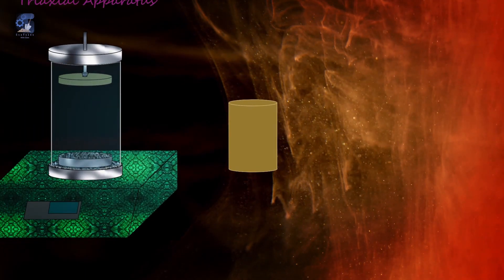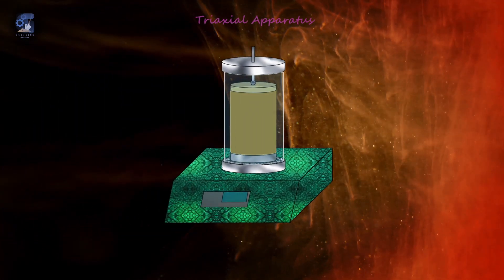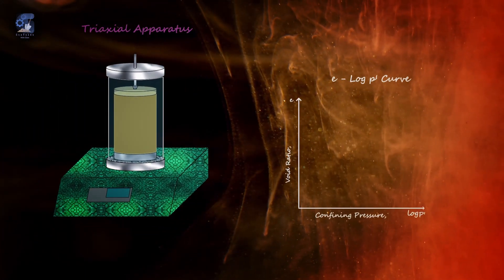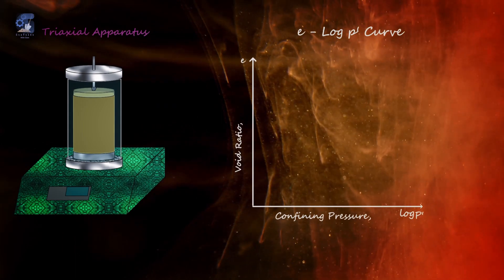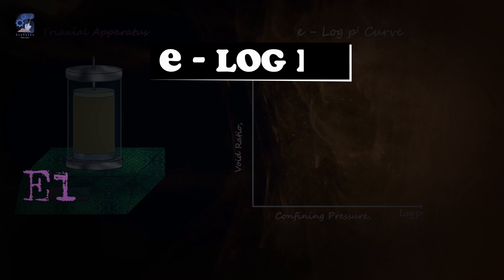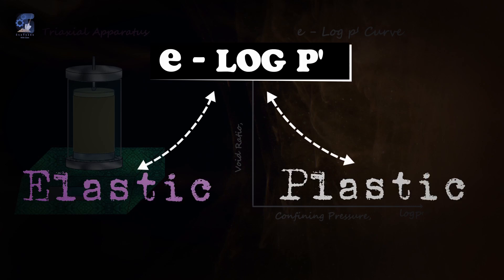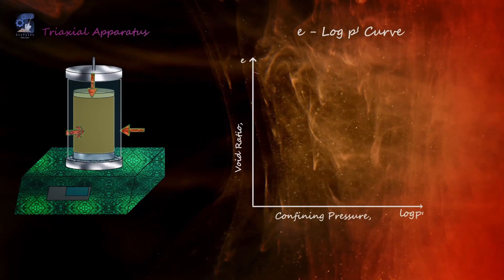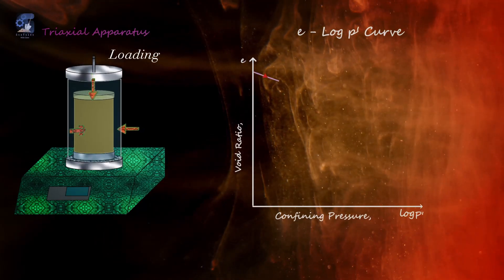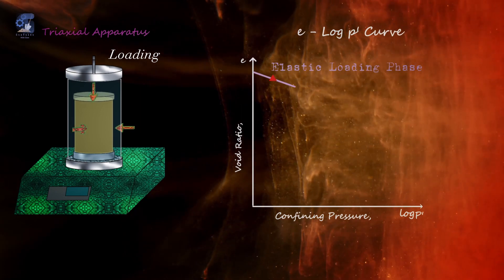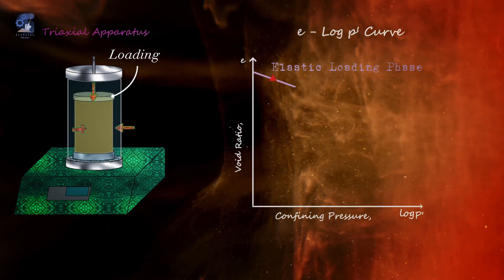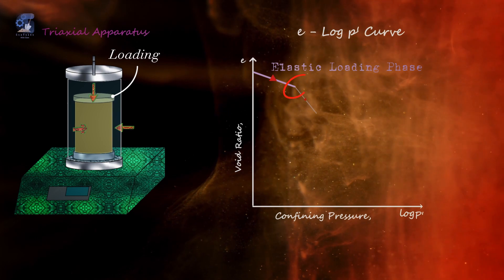This can be easily measured in a laboratory using a tri-axial machine and reproducing a void ratio versus consolidation pressure curve. The E log P curve provides the elastic and the plastic characteristics of our sample. At the initial stage of loading, the soil sample exhibits elastic characteristics up to a certain point where it transitions into plastic deformations.